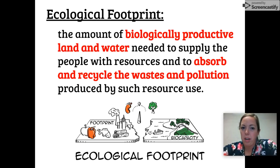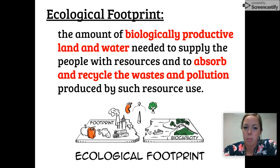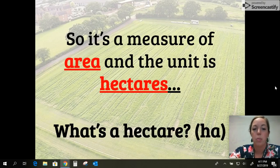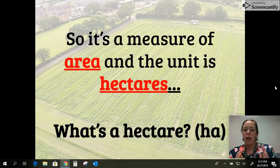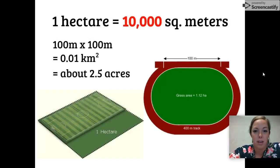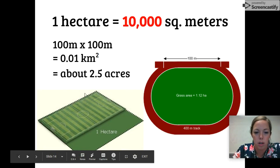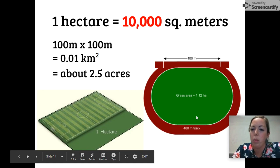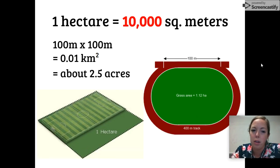By definition, your ecological footprint is the amount of biologically productive land and water needed to supply people with resources and to absorb and recycle the waste and pollution produced by such resource use. One thing you need to know is that your ecological footprint is a measure of area — the unit is hectares (HA). A hectare is about 10,000 square meters, roughly comparable to a soccer or football field. This 400-meter track grass area, for example, is about 1.12 hectares.